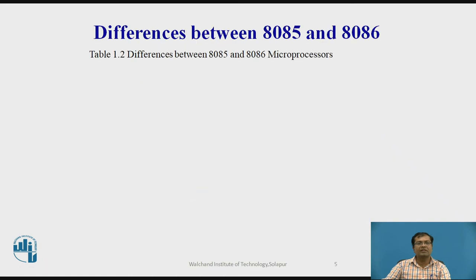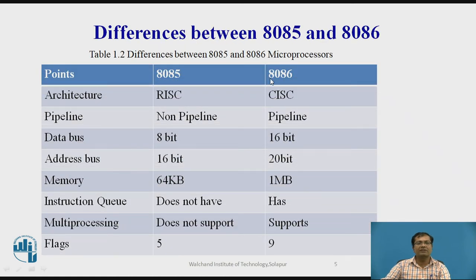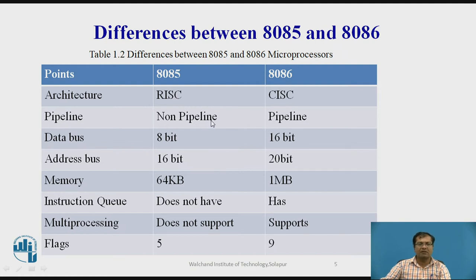Now we'll see more detail about the differences between the 8085 and 8086 microprocessors. The first point is regarding architecture: the 8085 supports RISC (Reduced Instruction Set Computer), while the 8086 is a CISC (Complex Instruction Set Computer). Regarding pipeline: the 8085 does not support the pipeline concept, but the 8086 does support pipelining.